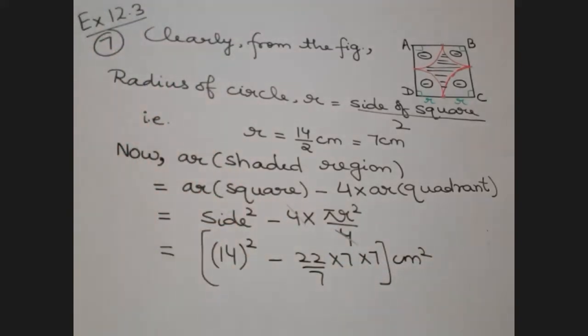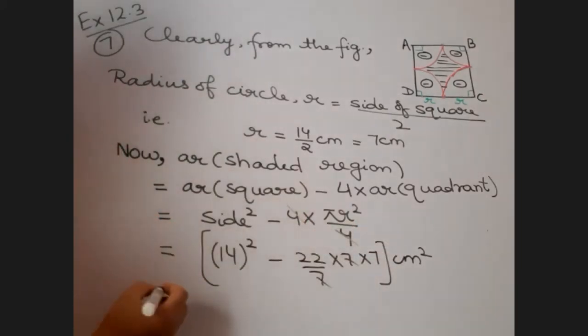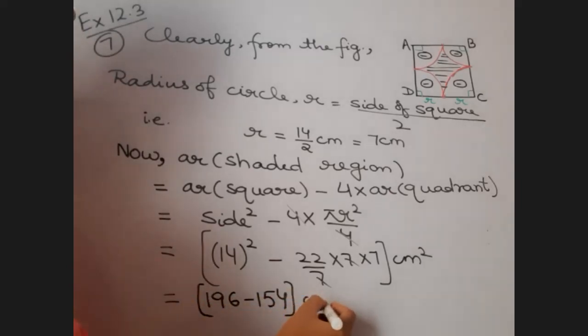What is 14 square? 196. 196. And in the next bracket? 7, 7 cancel. 22 into 7. 1, 5, 4. So, you see, I am writing unit at each and every step. So, what is the final answer?